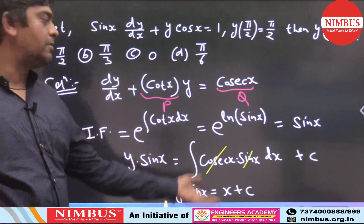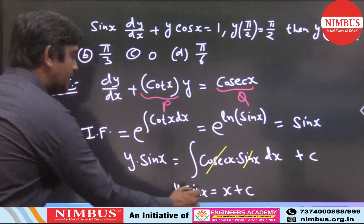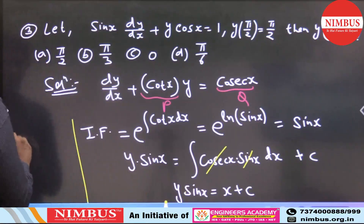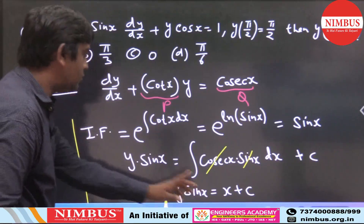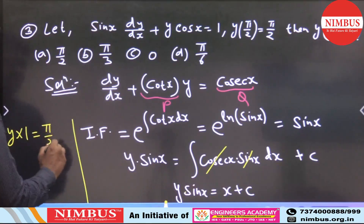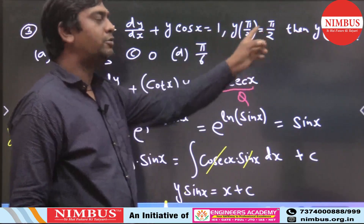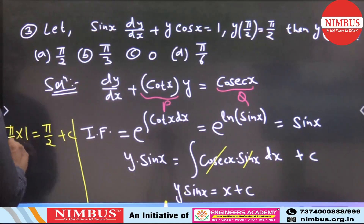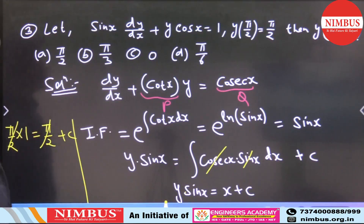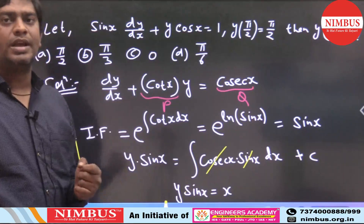Now find the arbitrary constant using the boundary condition. Put x = π/2 and y = π/2. Since sin(π/2) = 1, we get y·1 = π/2 + C, so π/2 = π/2 + C, giving C = 0. Therefore the particular solution is y·sin(x) = x.